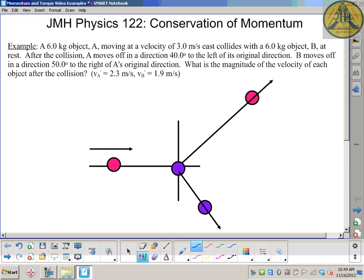This is a conservation of momentum in two dimensions question for grade 12 physics class. We have two objects each with six kilograms. The first object A is moving three meters per second towards object B which is stationary.